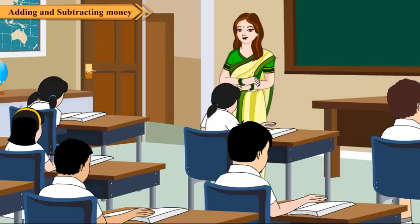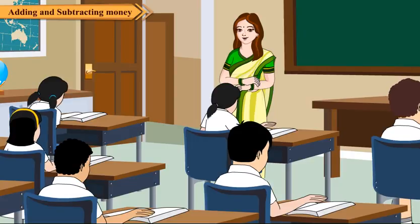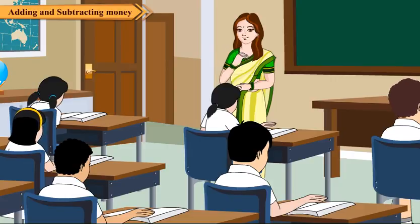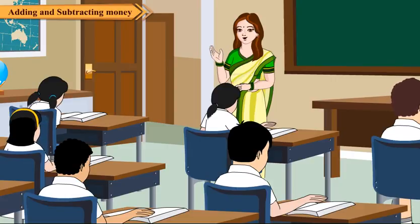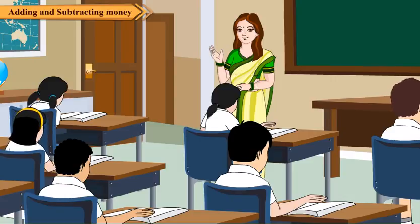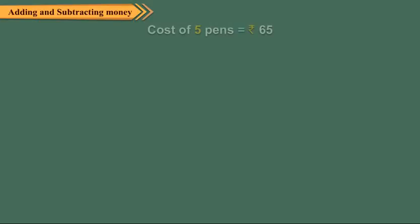Okay children, sometimes during shopping you know the price of several similar items and you have to find the price of one item. For this, you can use division to find out the price of a single item. Let us do a problem for this. The cost of five pens is 65 rupees. Find the cost of one pen.